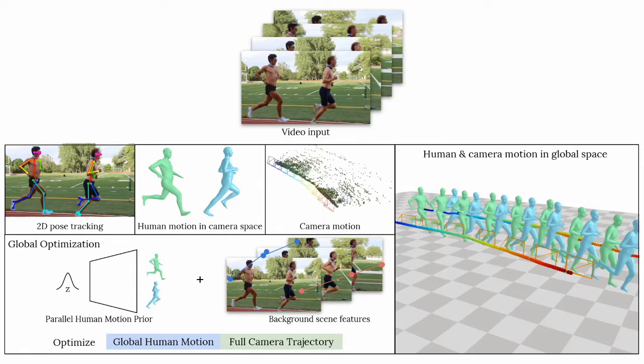In our motion prior, the latent codes for root orientation and local body pose are separated, resulting in higher quality motion.